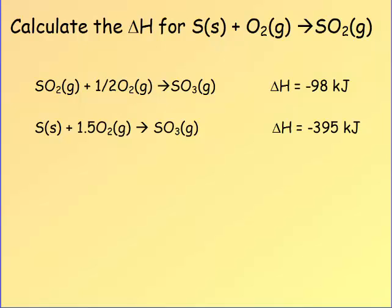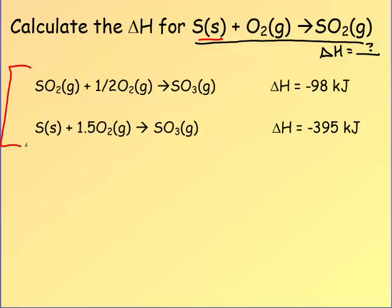For this reaction, we're calculating the delta H — this is the one we do not know. They give you multiple equations; in this case we have two equations that must add up to the overall equation. Start by finding the first item: we have sulfur. Find where sulfur is in the given reactions. Sulfur is located only in the second reaction. I want it as a reactant, it is a reactant, and I need one sulfur — I have one sulfur. So that equation is good.